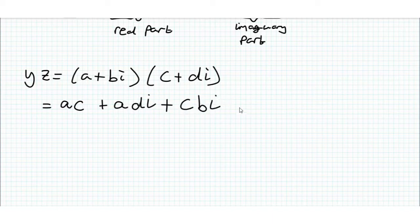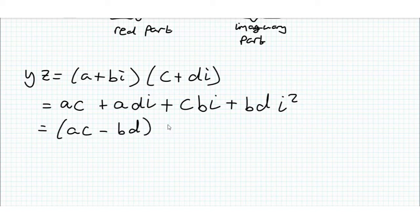And then we get plus bdi squared, but remembering i squared is equal to minus 1, so this leads to ac minus bd plus ad plus cb multiplied by i,